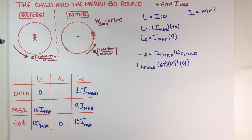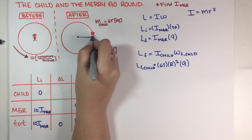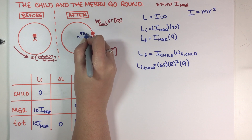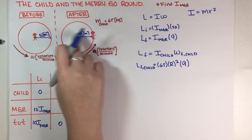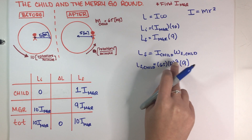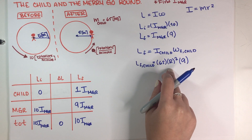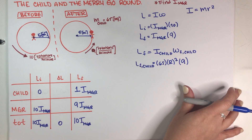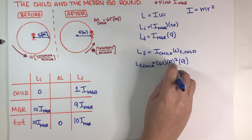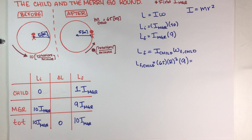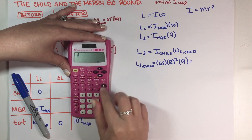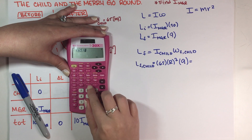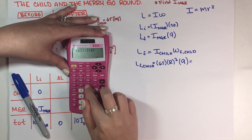I had to pause the video and go back — it turns out I missed writing one piece of information: the radius is 5 meters. The problem stated it in the instructions but I forgot to write it down, so I got stuck when I couldn't get an actual number. Yes, the radius is 5 meters. So L-final for the child is 65 times 9 times 5-squared.